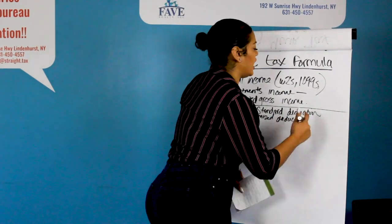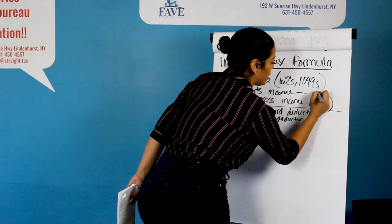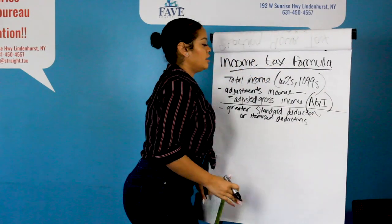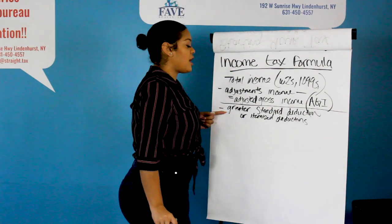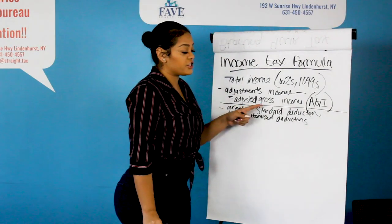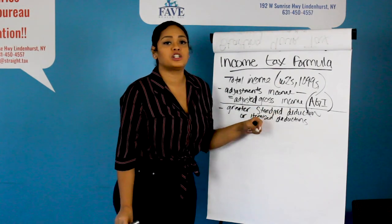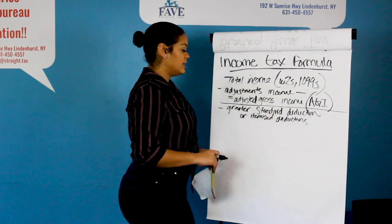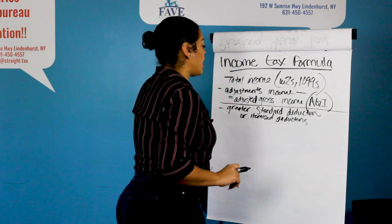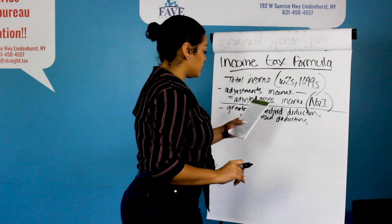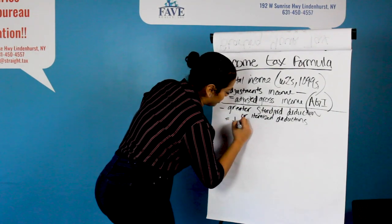What you're going to do is subtract that from your adjusted gross income. So after you get your AGI, from your AGI we're going to subtract whichever is greater — either your standard deduction, which the government already gives you, or your itemized deduction if you're going to itemize deductions. After you subtract your deductions, you're going to arrive at your taxable income.